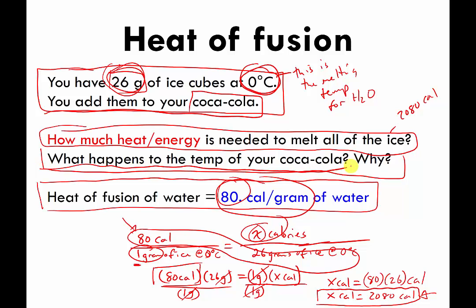The second question is more general: what happens to the temperature of the Coca-Cola? The temperature goes down — it drops. The reason is that the 2,080 calories used to melt the 26 grams of ice had to come from somewhere — and they came from the Coca-Cola that the ice was dropped into. Energy in the Coca-Cola was used to melt the ice, which means heat left the Coca-Cola, so its temperature went down. That's basically how ice cubes work to cool things down: energy is taken from the liquid to melt the ice, making the liquid cooler.